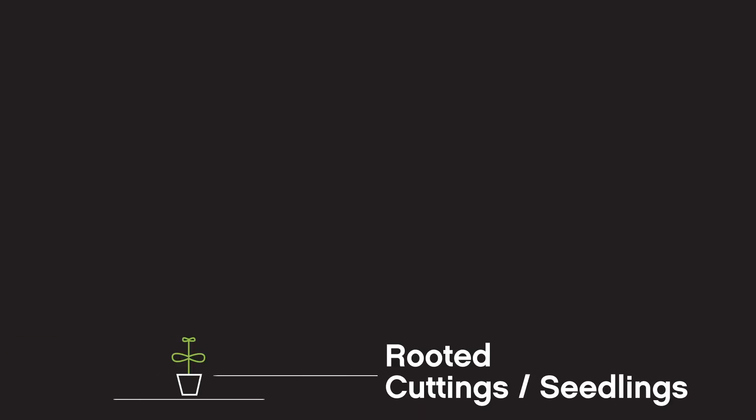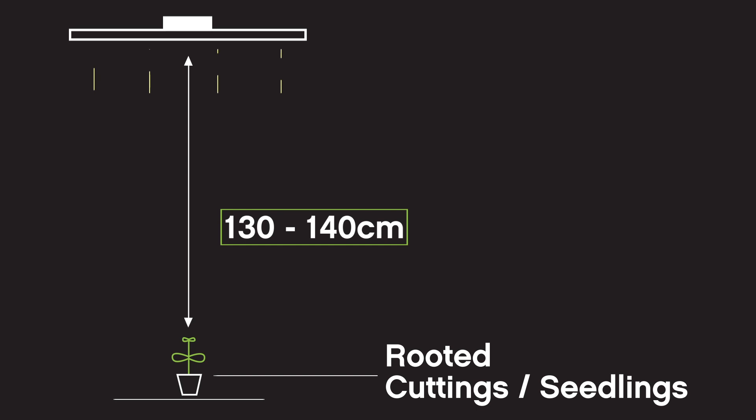To start off, once your cuttings or seedlings have rooted and been moved out of their propagator and placed in the grow tent with your Sirius LED, you'll want to hang your light 130 to 140 centimeters above your plants and set the Sirius to its lowest dimmable setting of 250 watts. This ensures your young plants don't receive too much light in this vital early stage of growth.